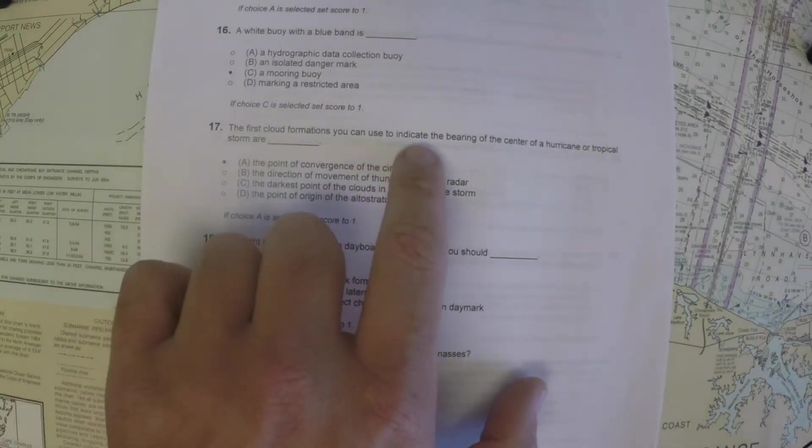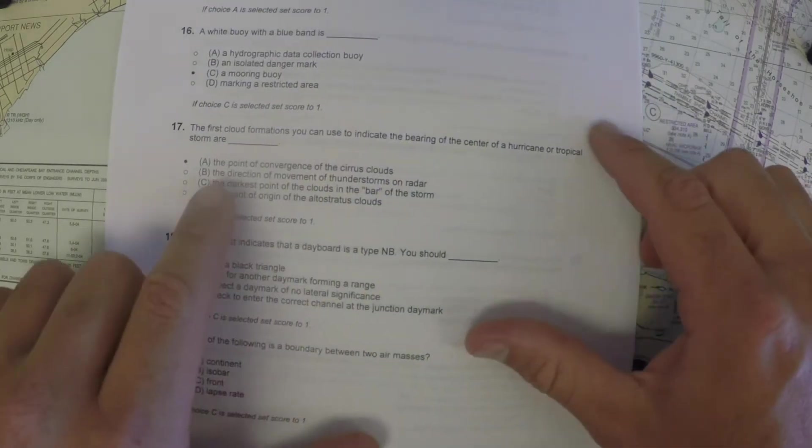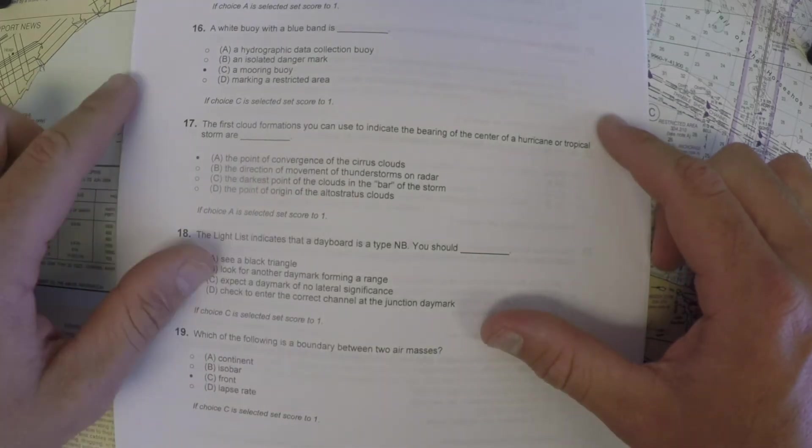The first cloud formations you can use to indicate the bearing of a hurricane is the point of convergence of the cirrus clouds.